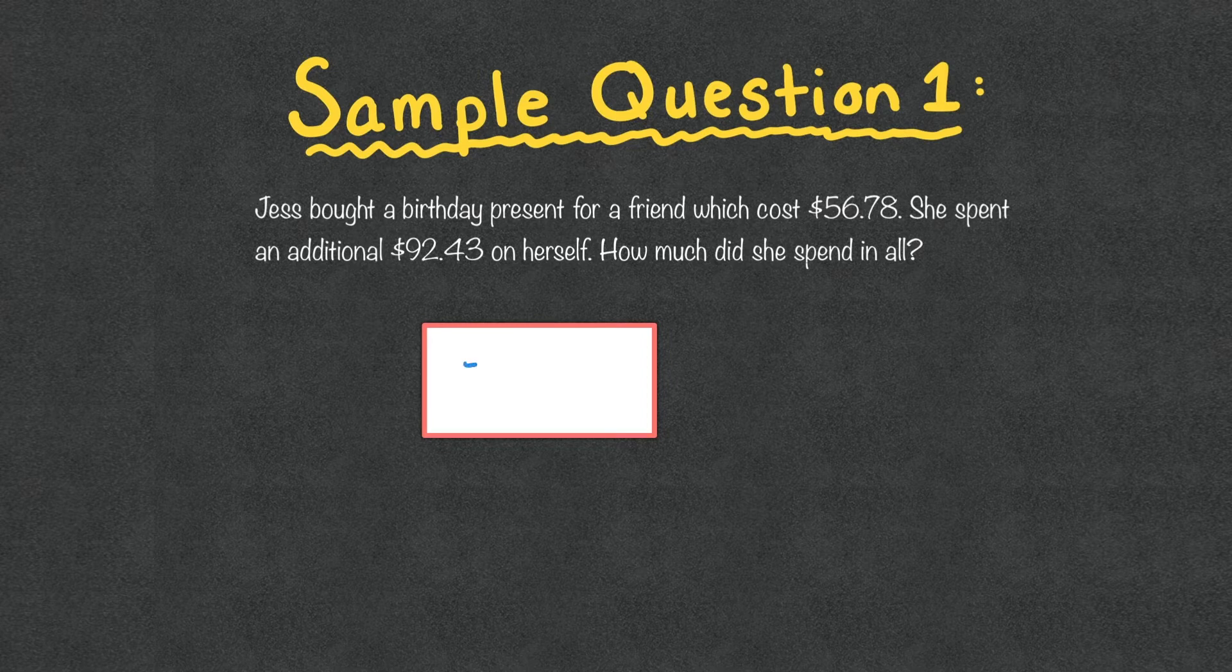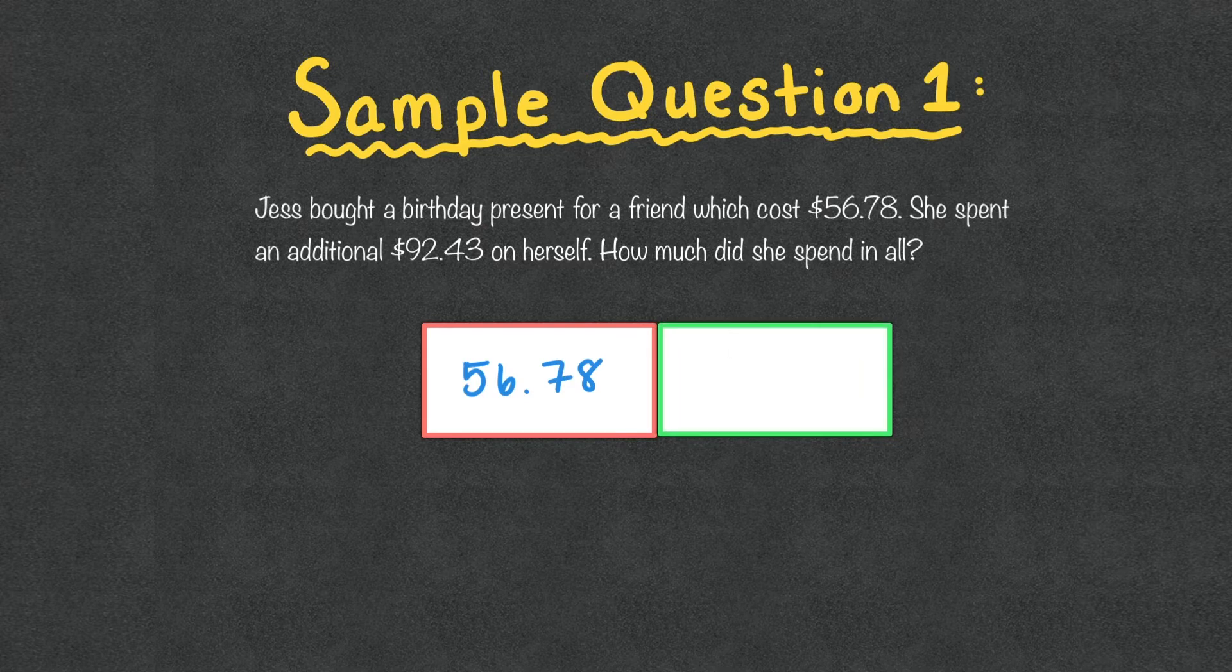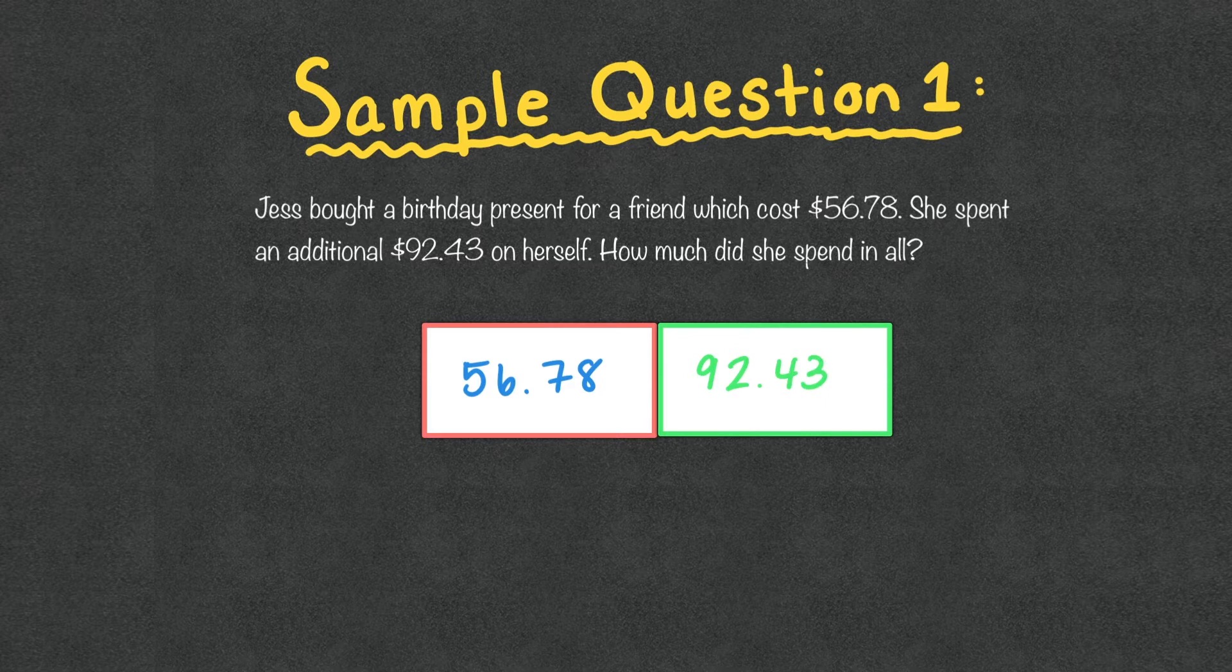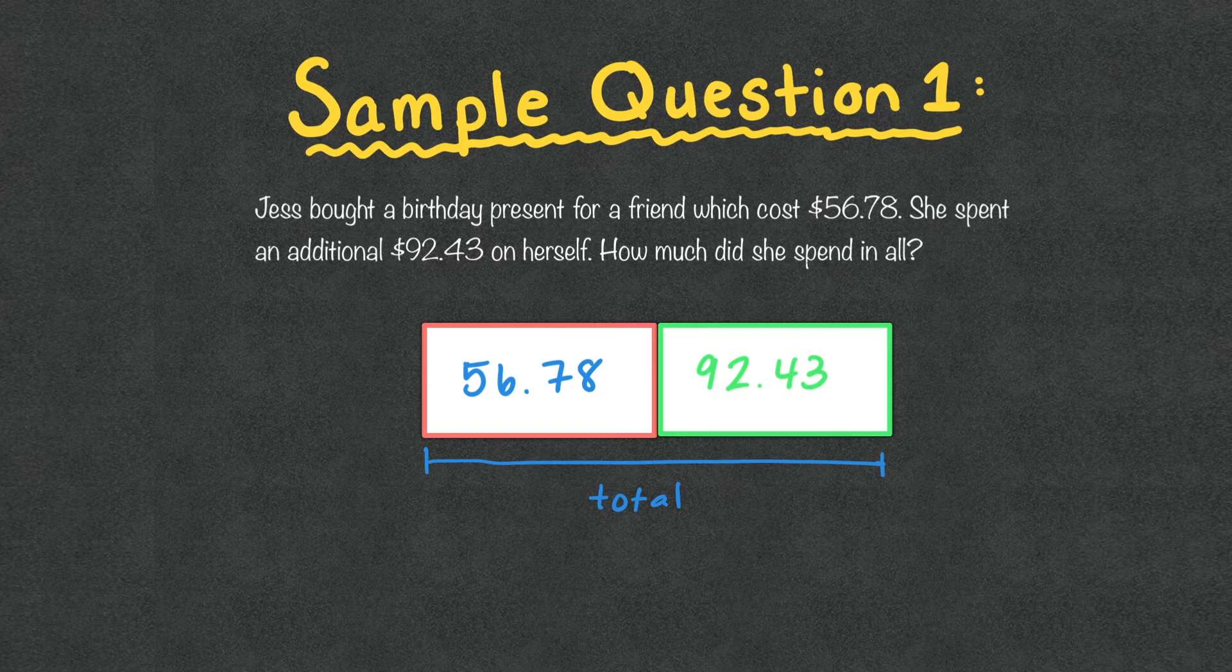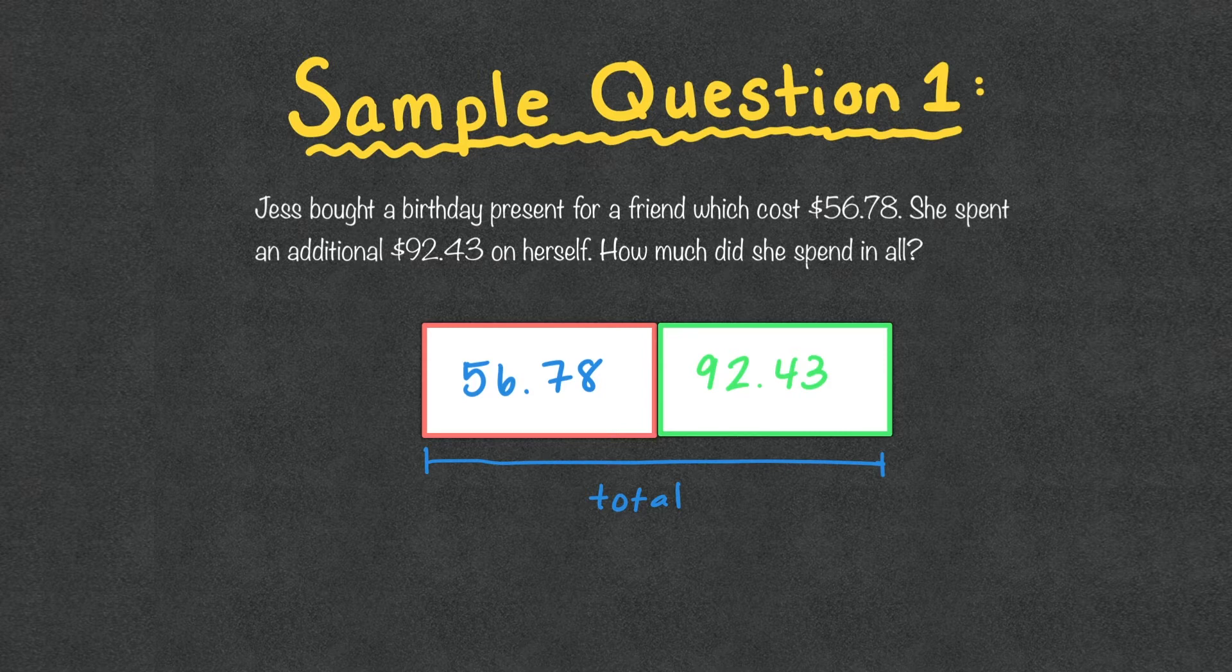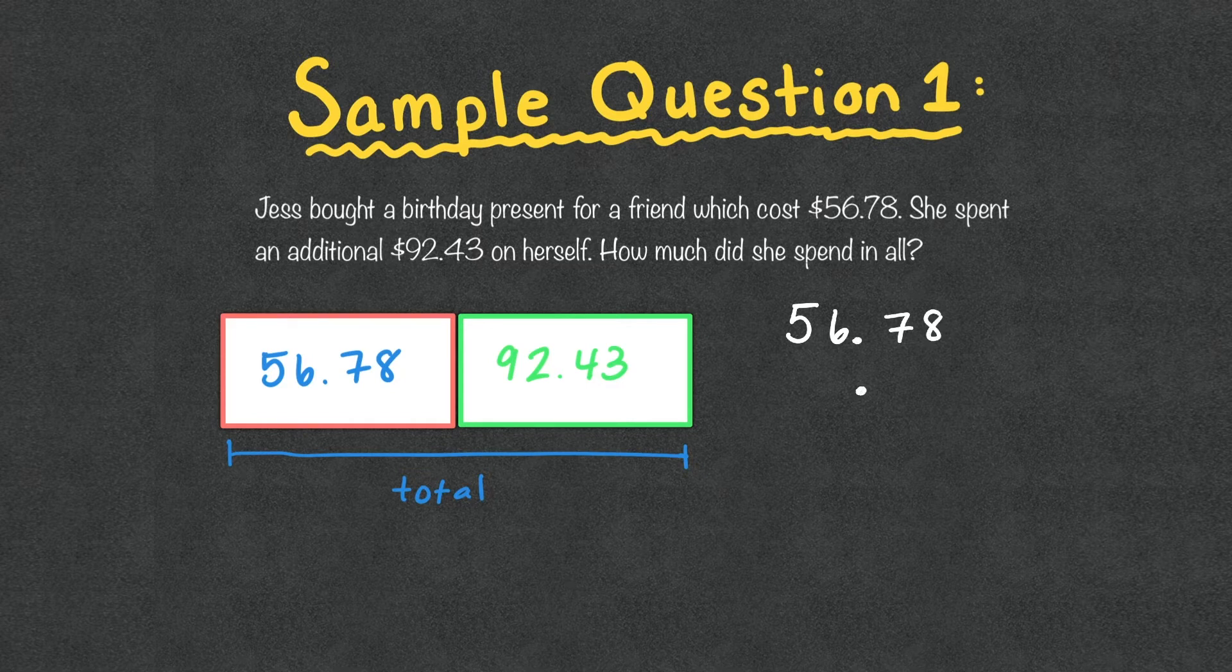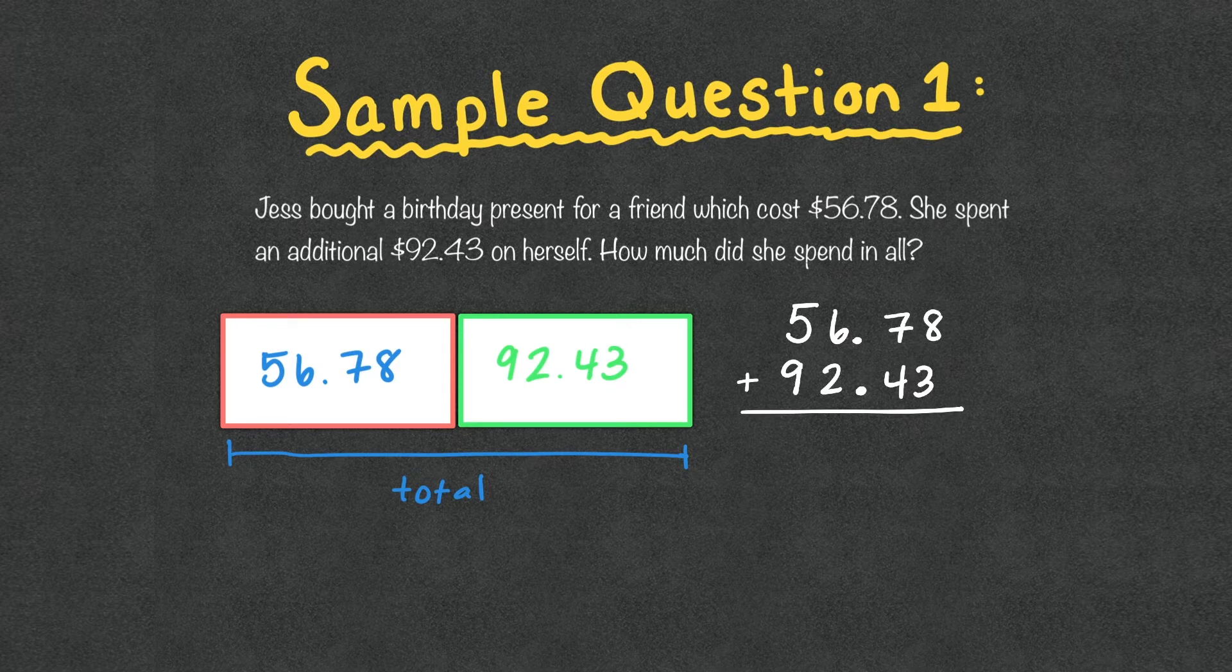So we have birthday present for a friend, which we know cost $56.78. In addition to that, what it says is that she spent an additional, so let's get this box here. Let's move it over a little bit. An additional $92.43 on herself. And we're looking for how much she spent in all. So we're missing our total right here. So we can easily take our numbers. So let's just shift all of this stuff over.